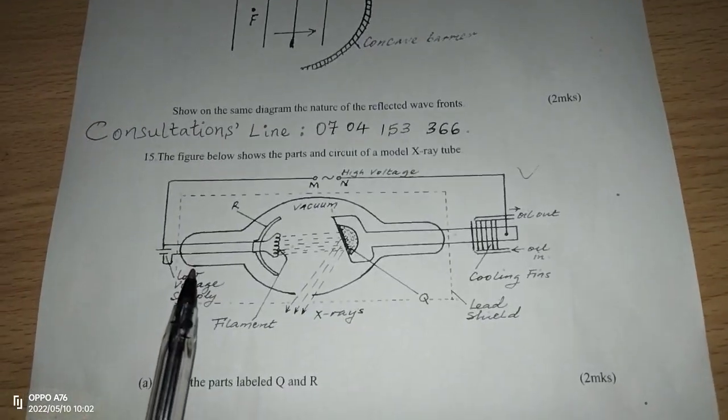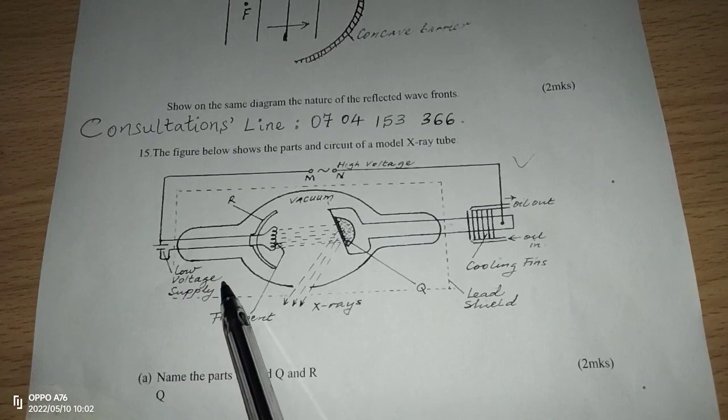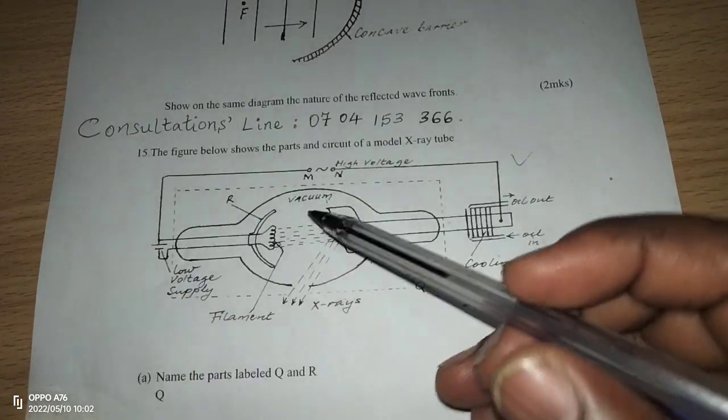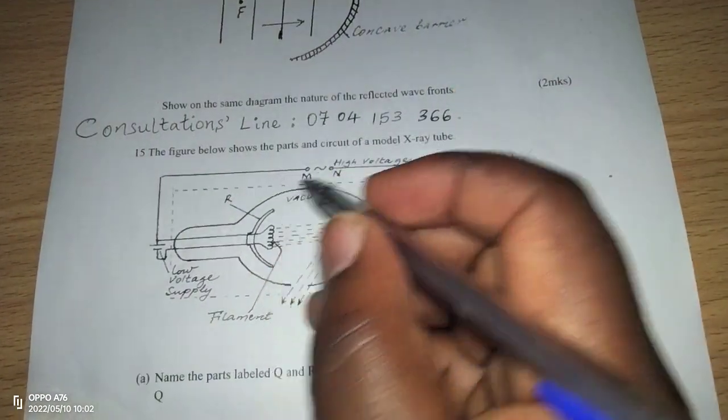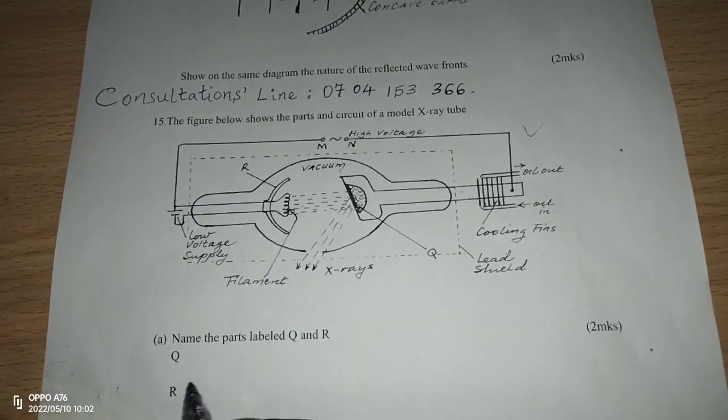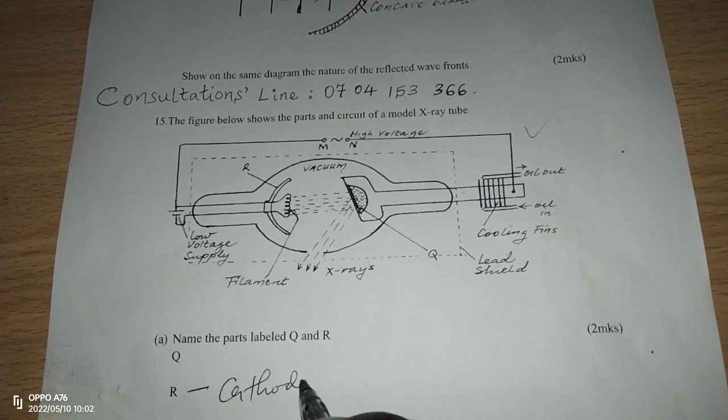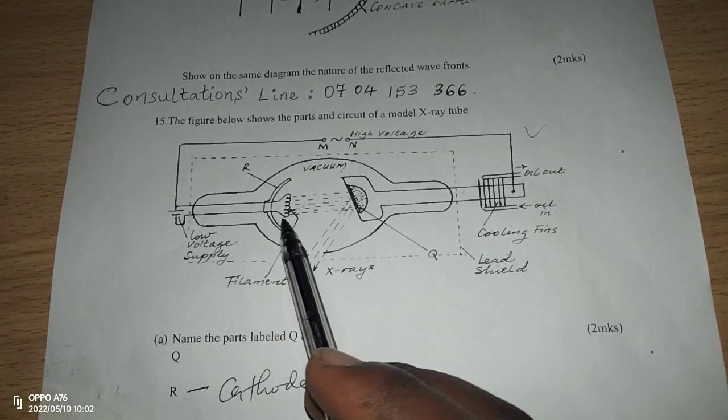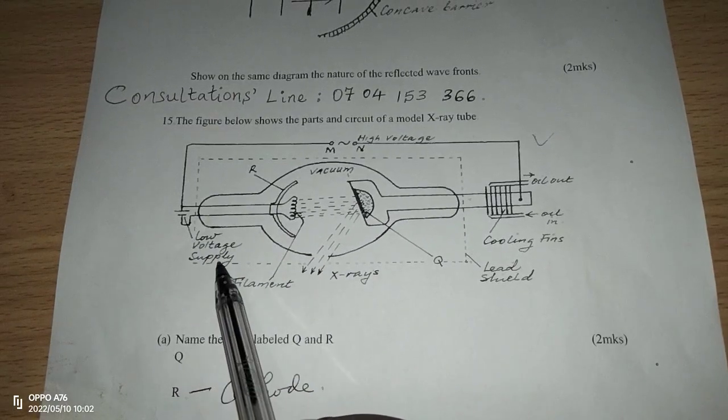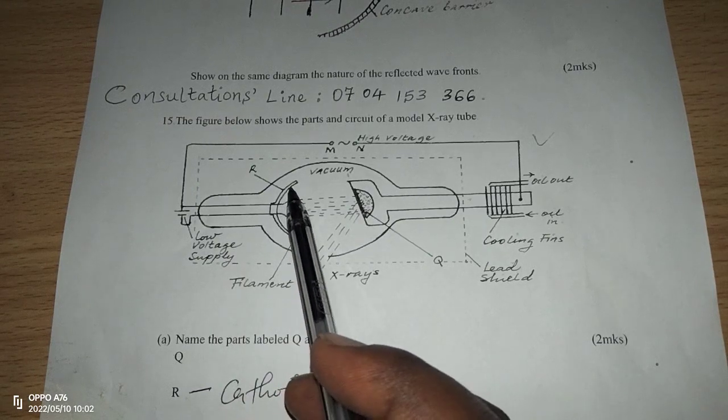As you can see on the diagram, there is a voltage supply and we have part R here. Part R, as we are told to label it, is the cathode. This is a metallic cathode. Then we have a heater filament. So the low voltage supply brings current to the cathode.